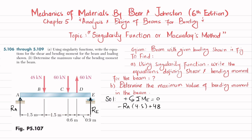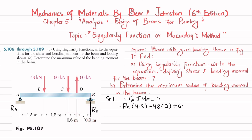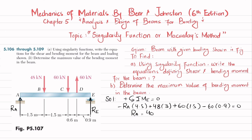The second moment about point E is due to the 48 kilonewton load; perpendicular distance is 3 meters, producing a counterclockwise moment, so it is positive: plus 48 times 3. Then plus 60 times 1.5, and the last moment is minus 60 times 0.9 (clockwise). Setting the sum equal to zero and solving gives R_A equal to 40 kilonewtons.